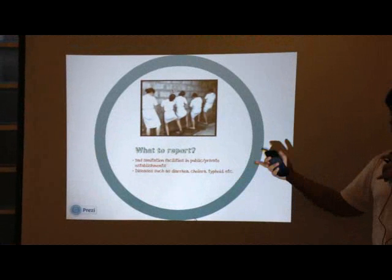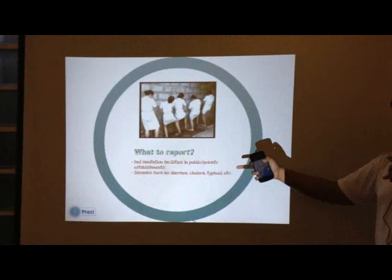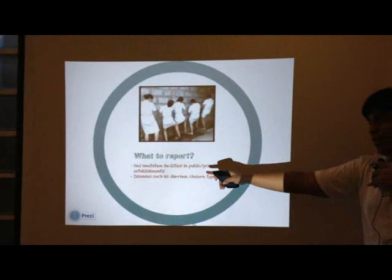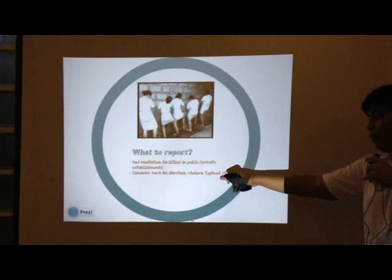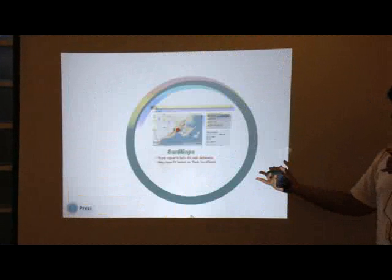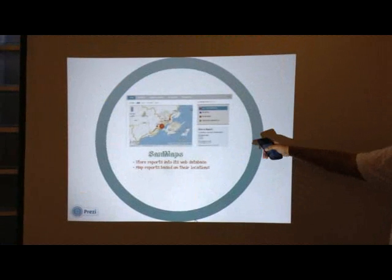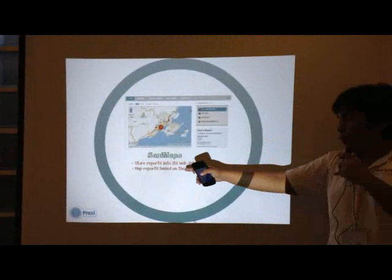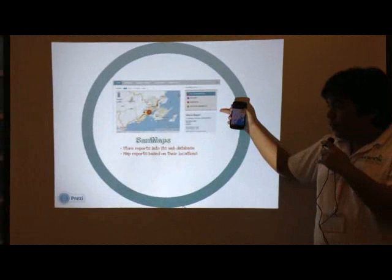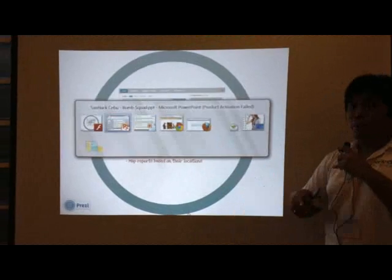The system reports on vaccination facilities in public and private settings, especially concerning diseases such as diarrhea, cholera, and typhoid. This is how it looks. It stores reports into its web database and maps reports based on their location.